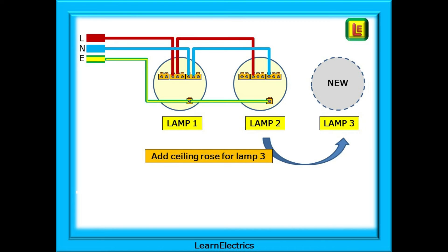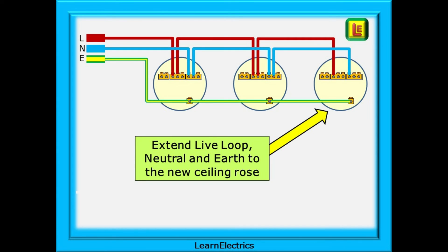Our first step is to position the new ceiling rose for lamp number three. Now we can add the wiring to the new ceiling rose. Begin by extending the phase wires or live loop from the centre block of three on one ceiling rose to the centre block of three on the new ceiling rose. Extend the neutral from the outside block of three to the same block on the new fitting. And finally extend the earth or CPC between the earth terminals.